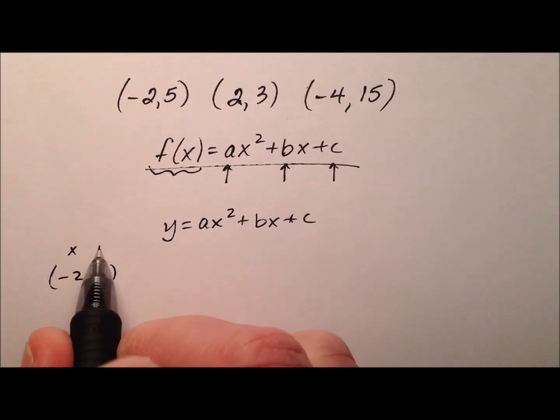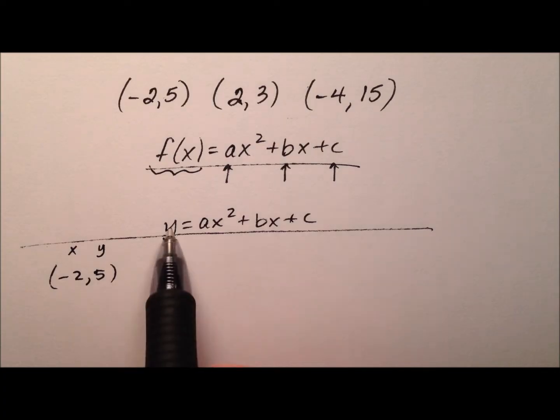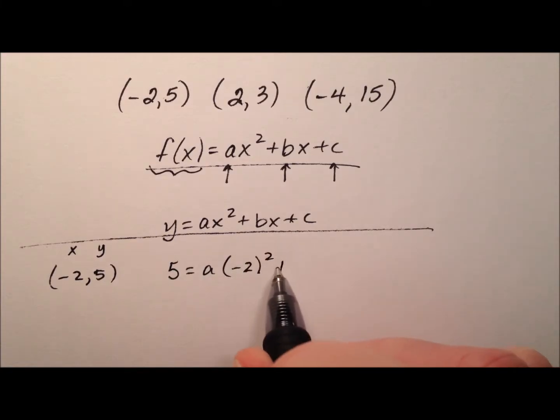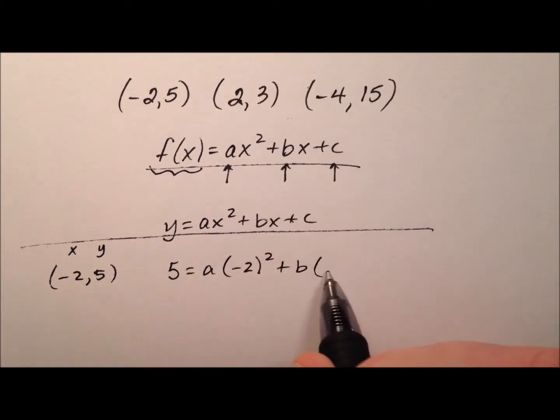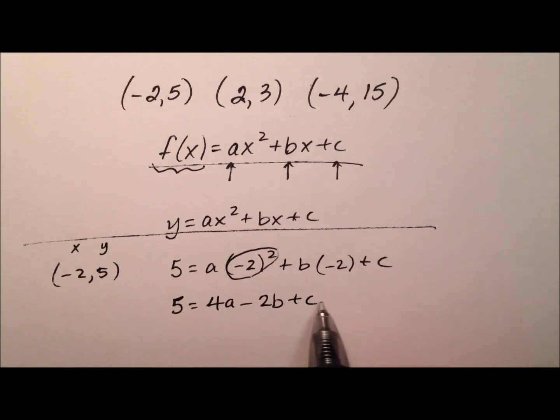The negative 2 is my x value, the 5 is my y value, so let's write an equation. So y, that's my 5, equals a, and my x squared, that's negative 2 squared plus b times x plus c. When I polish this up, I see that 5 equals, well, negative 2 squared is negative 2 times negative 2, so 4a minus 2b plus c.